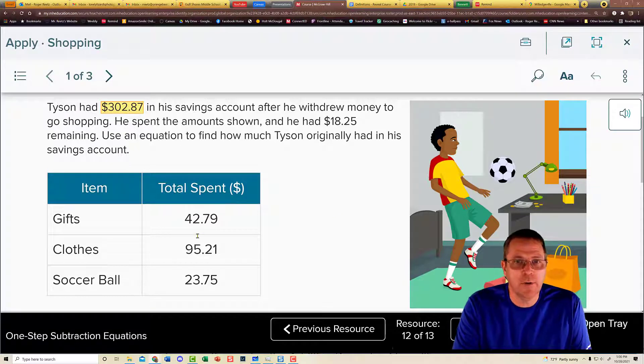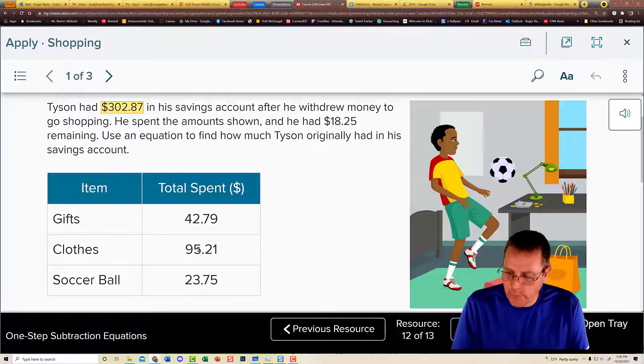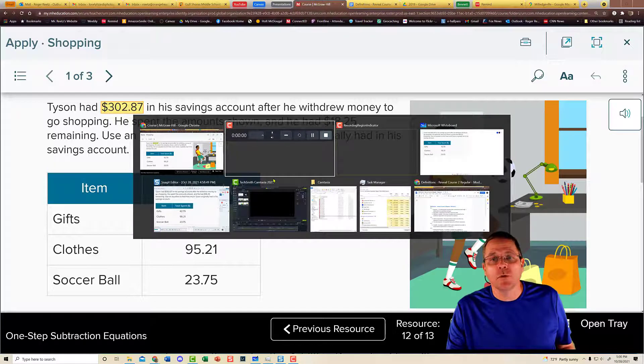He spent the amount shown. That's these amounts down here. And after that, he had $18.25 left. And we want to use an equation to find out how much money Tyson originally had in his savings account. And this one's going to be a little bit tricky. So I'm going to show you how it works.